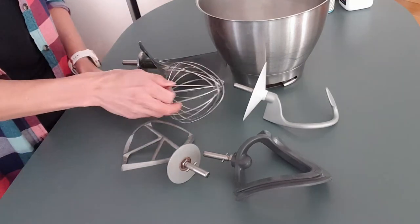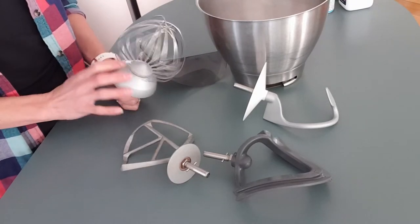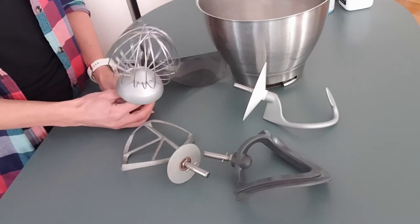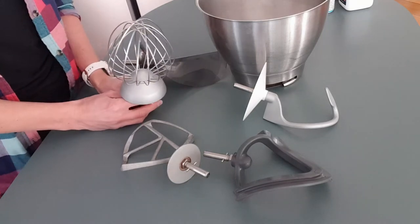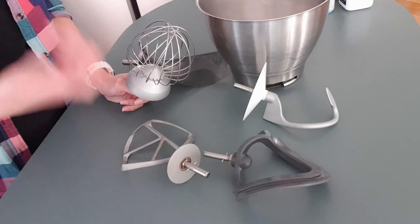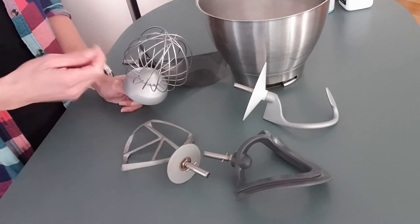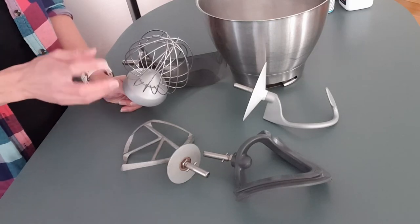Okay, so back to the attachments. This is your balloon whisk. It's easy to remember—it looks like a balloon. It's used for very light and airy mixes, so you can use this to beat up egg whites or whisk creams to get whipped cream and stuff.